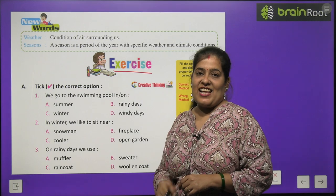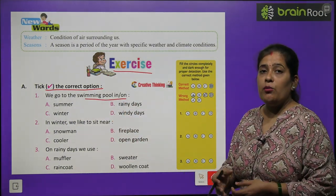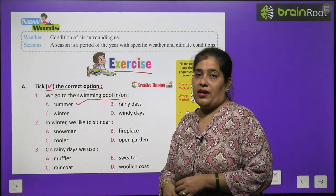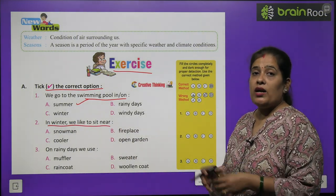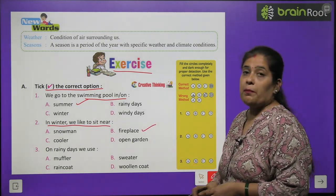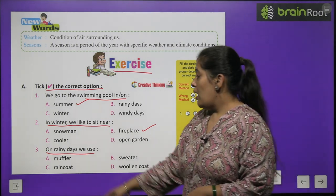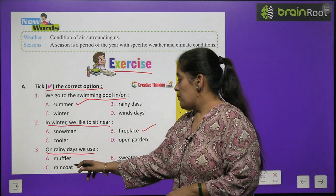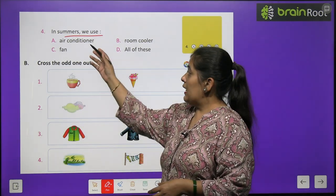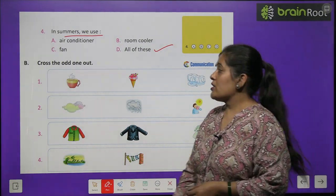Exercise A — Take the correct option. Number one: We go to the swimming pool in — Summer. Number two: In winter we like to sit near — fireplace, kyunki wahan se garmai milti hai. Number three: On rainy days we use — raincoat. Number four: In summer we use — air conditioner, fan, room cooler. The correct option is D — all of these.